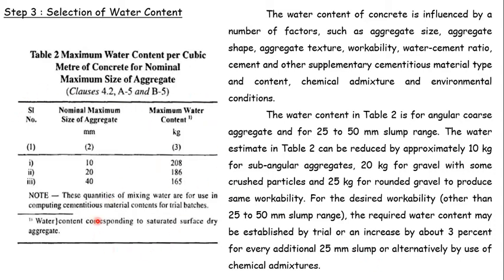Table 2 gives the maximum water content per cubic meter of concrete for nominal maximum aggregate sizes: 208 kg for 10 mm, 186 kg for 20 mm, and 165 kg for 40 mm aggregate sizes. This water content corresponds to saturated surface dry aggregate conditions.